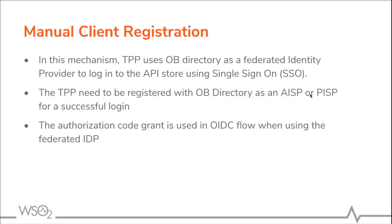Also, the authorization code grant is used in the OIDC flow when using the federated IDP. An ASPSP who supports manual registration will offer a developer web portal. If this mechanism is used, the ASPSP must act as a SAML 2 or OIDC compliant relying party to the Open Banking Directory, where the PTC — the primary technical contact — will be strongly authenticated.